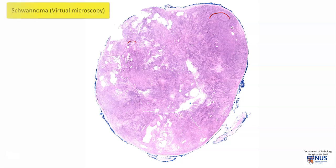Hello, this is a virtual microscopy slide of a schwannoma, which is a benign nerve sheath tumor. As the name suggests, this tumor arises from Schwann cells.